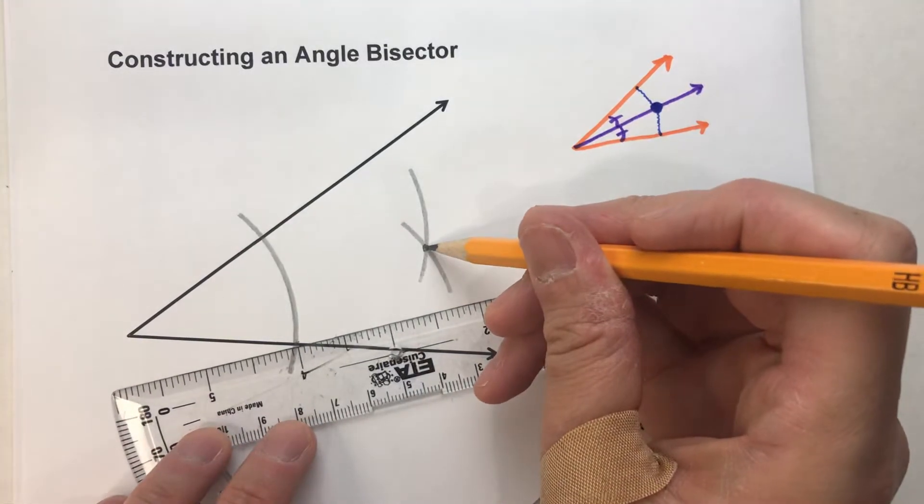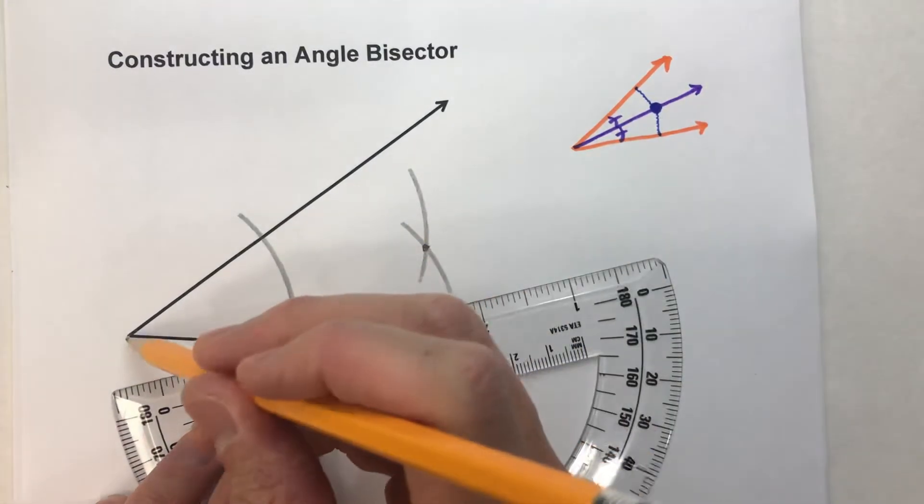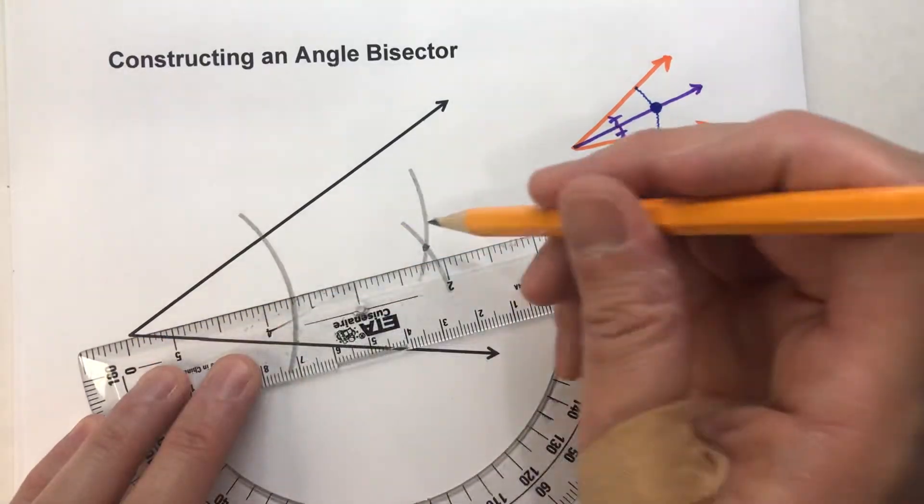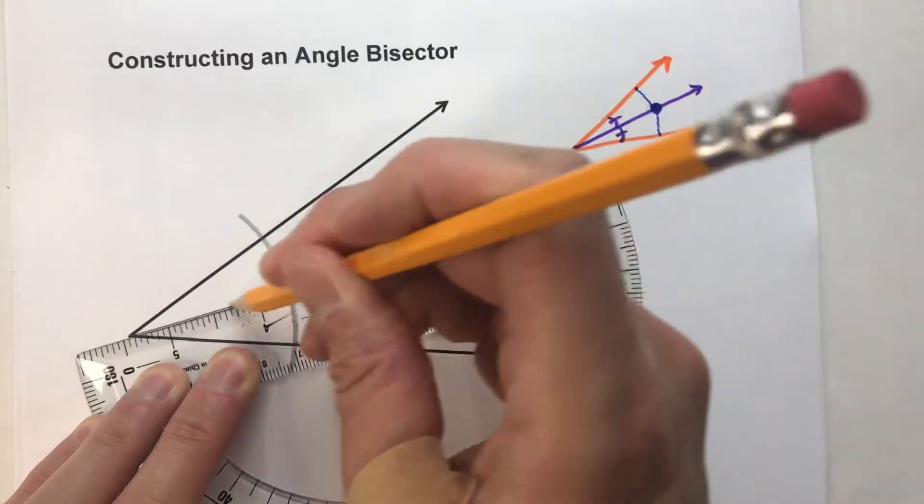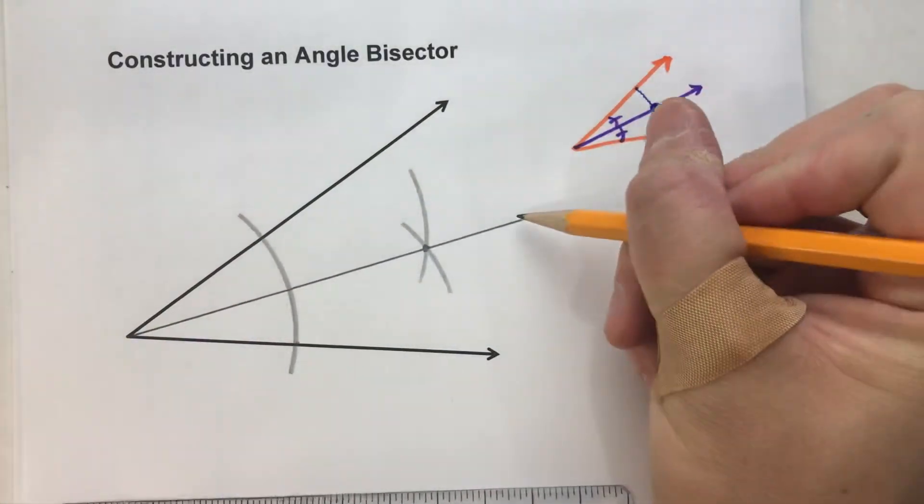So if this point is on the angle bisector and I know the angle bisector goes to the vertex, I now know where my angle bisector is. There it is right there.